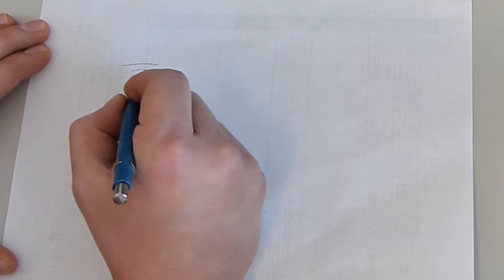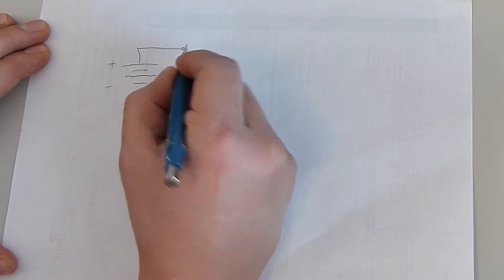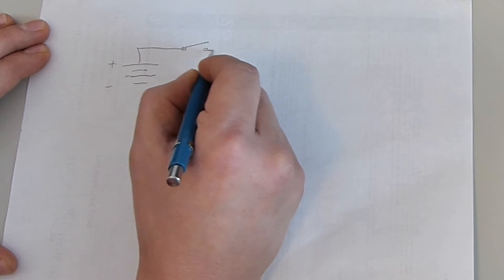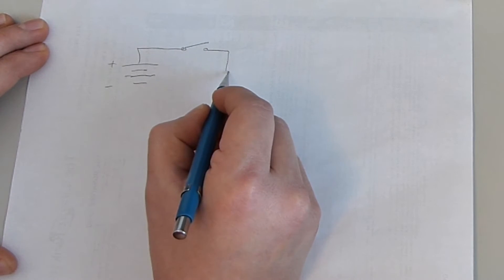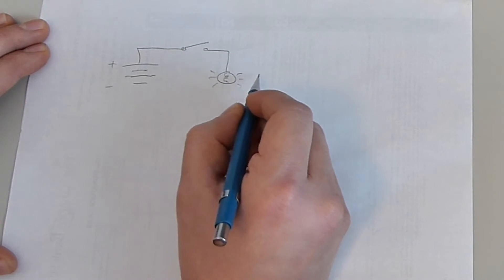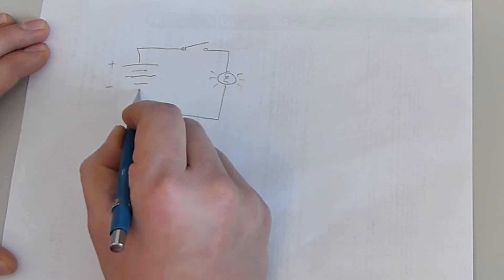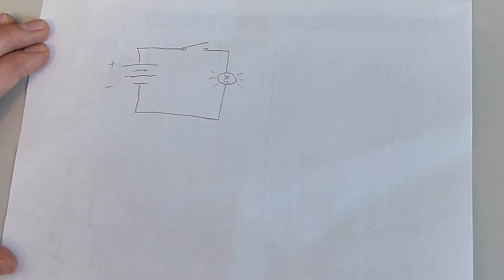So we have our power source. This is a typical circuit right here, just for an example. And then we have a load here. Could be a light, could be a horn, anything, any sort of load. So that's what you're typically looking at.